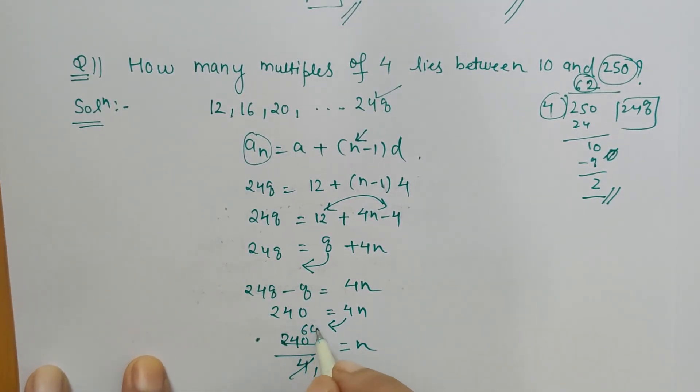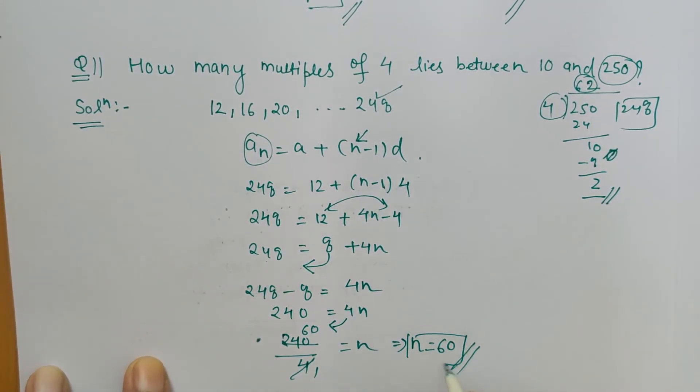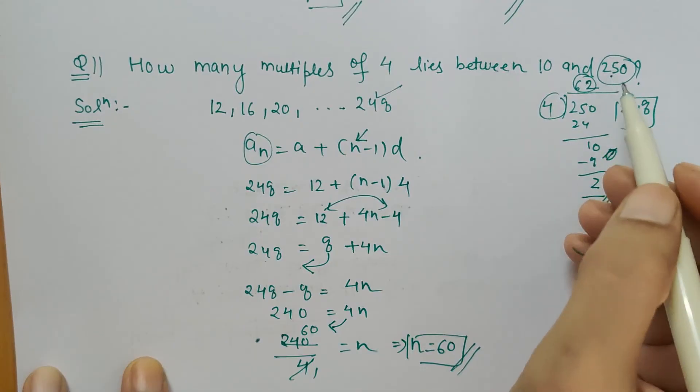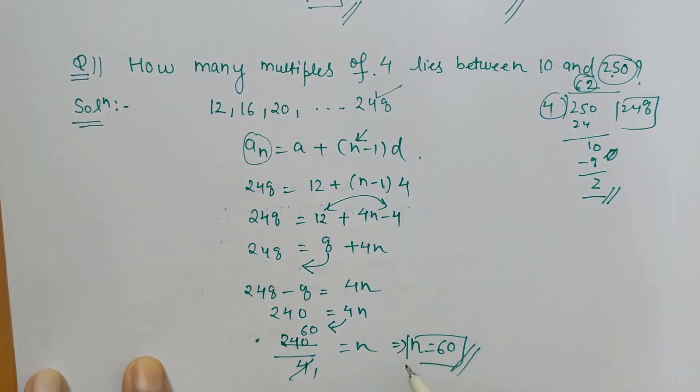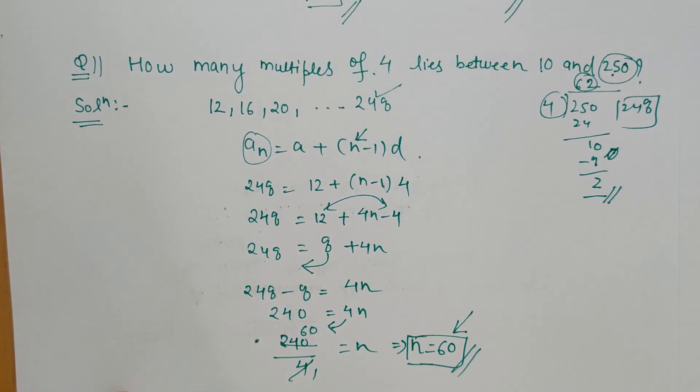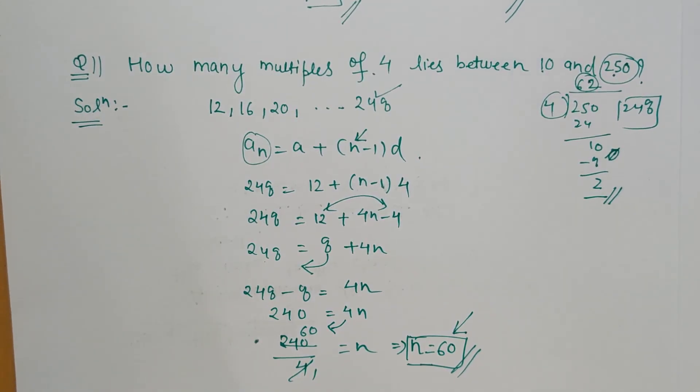When we cancel it, that is 60. So the number of numbers that lies between 10 and 250 divisible by 4, or the multiples of 4, are 60 in count. This is how we solve this type of problem. Thank you.